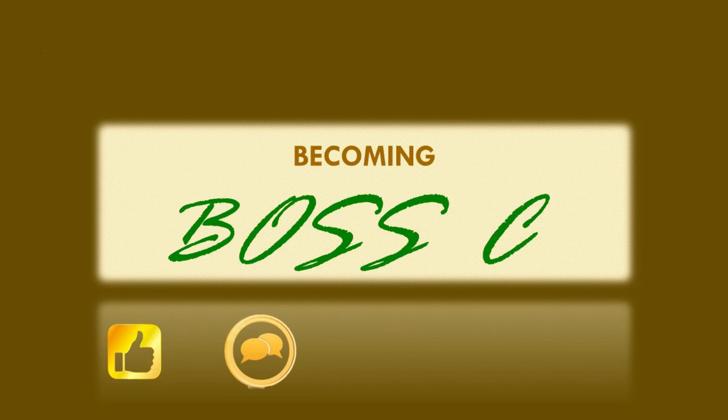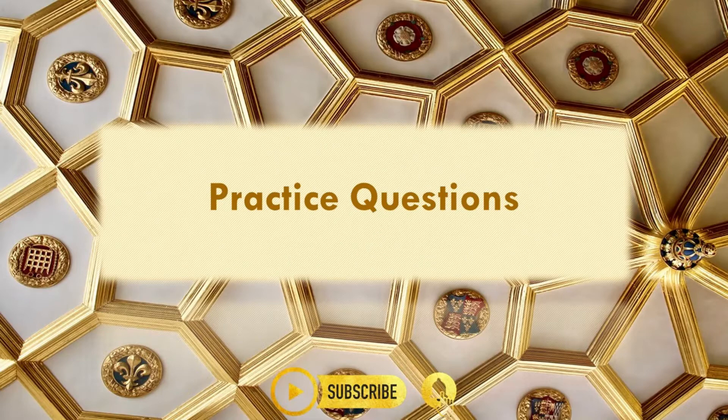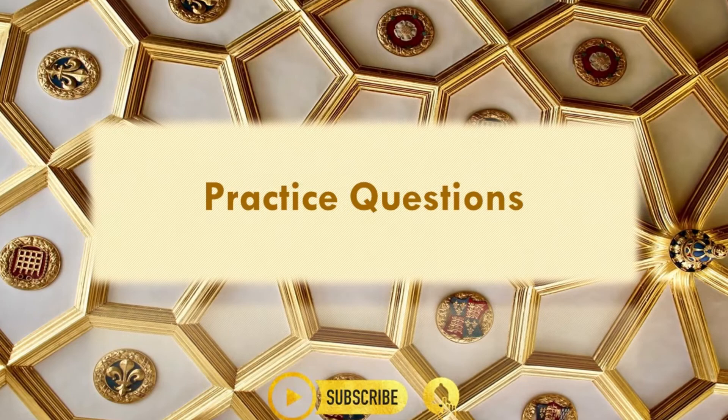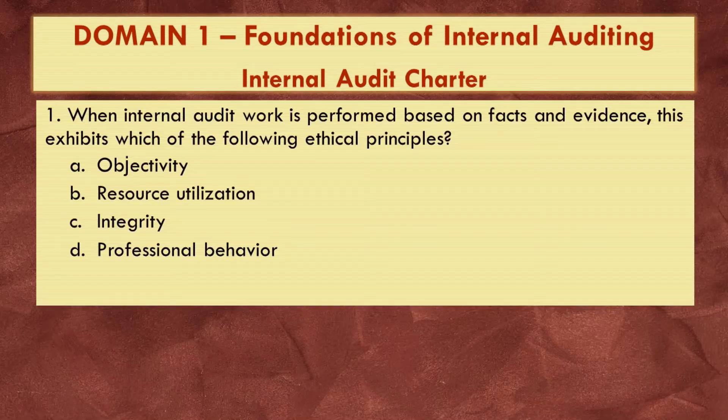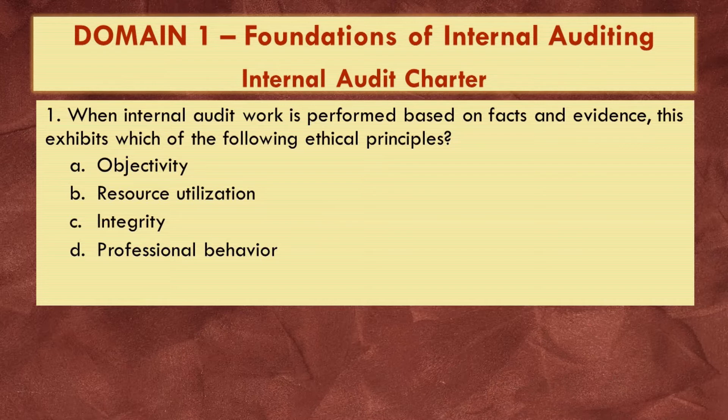If you are still here, be sure to subscribe to the channel for more important information and click the like button if you are enjoying this lesson. Next, we will answer some practice questions. You can pause the video between questions if you need more time. Number one: when internal audit work is performed based on facts and evidence, this exhibits which of the following ethical principles? A. Objectivity. B. Resource utilization. C. Integrity. D. Professional behavior.